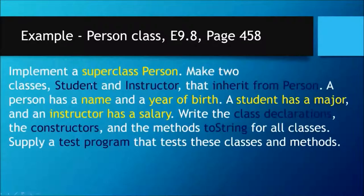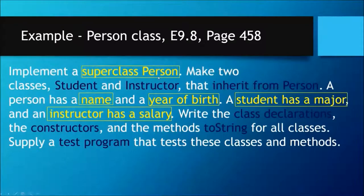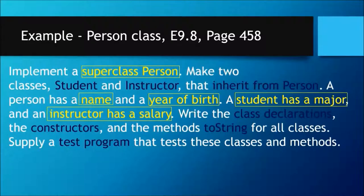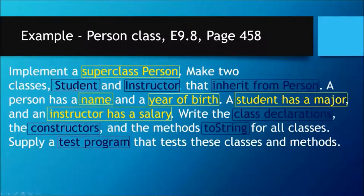The first thing I would do is color code it. All the data that's given to me is going to be in yellow — super class Person, name, year of birth, Student has a major, Instructor has a salary. Now let's highlight the things we need to find in dark blue: Student, Instructor, inherit from Person, class declarations, constructors, toString, and test program. These are the things I need to do in my program.